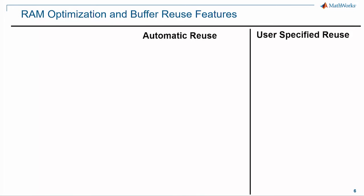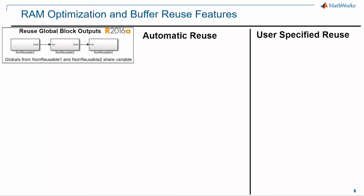In the general efficiency area, we have two main approaches: one is automatic buffer reuse, and another is user-specified buffer reuse. Dan is going to elaborately talk about the user-specified reuse, so let's look at the evolution of different features that has happened over time.